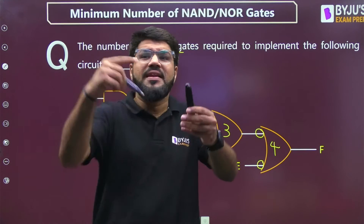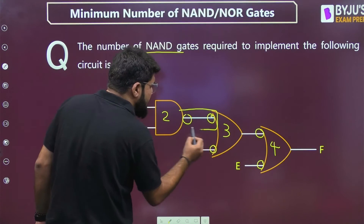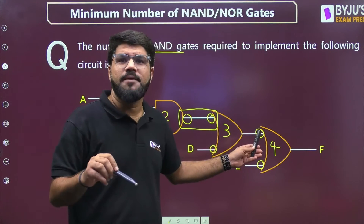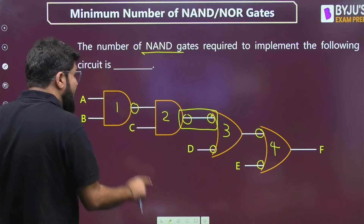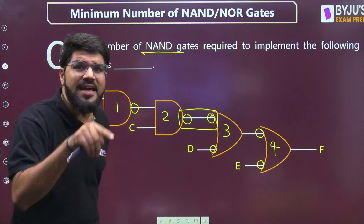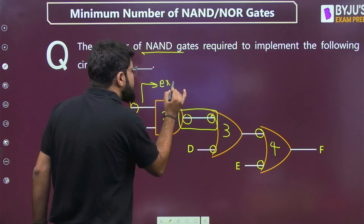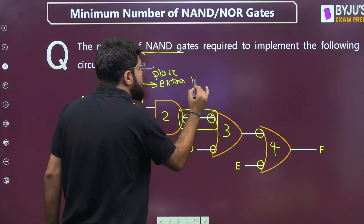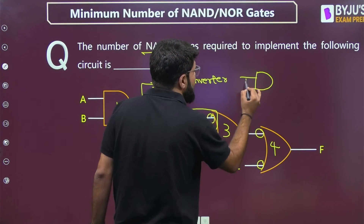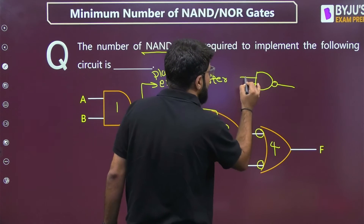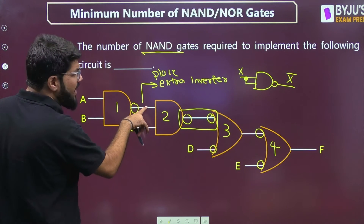Now we've placed extra bubbles which could spoil the functionality. Looking at a particular path, there are two bubbles in series — inverter followed by inverter — complements cancel each other, so no problem there. But at another point there is a single extra bubble, which will spoil the logic. So we need to place one more extra inverter. An inverter implemented using a NAND gate requires one NAND gate with both inputs shorted: if the input is X, the output is X̅.